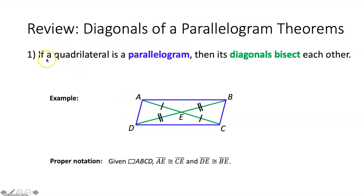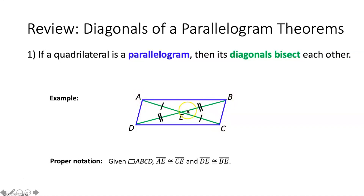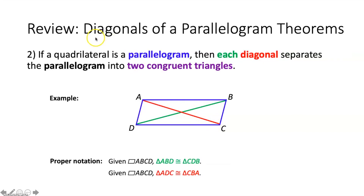There are two diagonal theorems for parallelograms. The first one says if a quadrilateral is a parallelogram then the diagonals bisect each other. If we know that quadrilateral ABCD is a parallelogram, then the two diagonals — segment AC and segment BD — are going to cut each other in half.